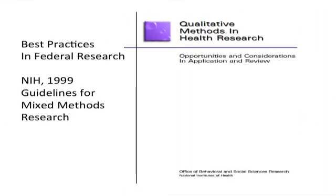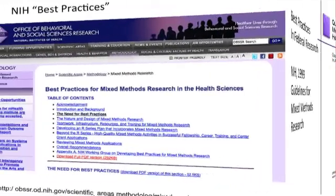The federal government has been interested in mixed methods research. The National Science Foundation example is a good illustration, with standards on evaluation including a section on mixed methods. Back in 1999, the National Institutes of Health came up with guidelines for qualitative methods and health research, put together by a panel of researchers. If you look closely at that 1999 guideline, you will see a section on what they called combining quantitative and qualitative research — starting this process of developing recommendations for mixed methods research in 1999.